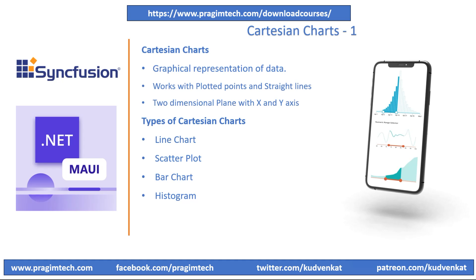Histogram is similar to a bar chart but used to represent the distribution of a continuous data set. In a histogram, bars touch each other as the data is continuous. Area chart is similar to a line chart but the area between the line and the x-axis is filled, used to emphasize the cumulative total of a quantity over time. Bubble chart is similar to a scatter plot but each data point also has a size value, represented by the size of the bubble. Cartesian charts are widely used in mathematics, physics, economics, and data visualization.